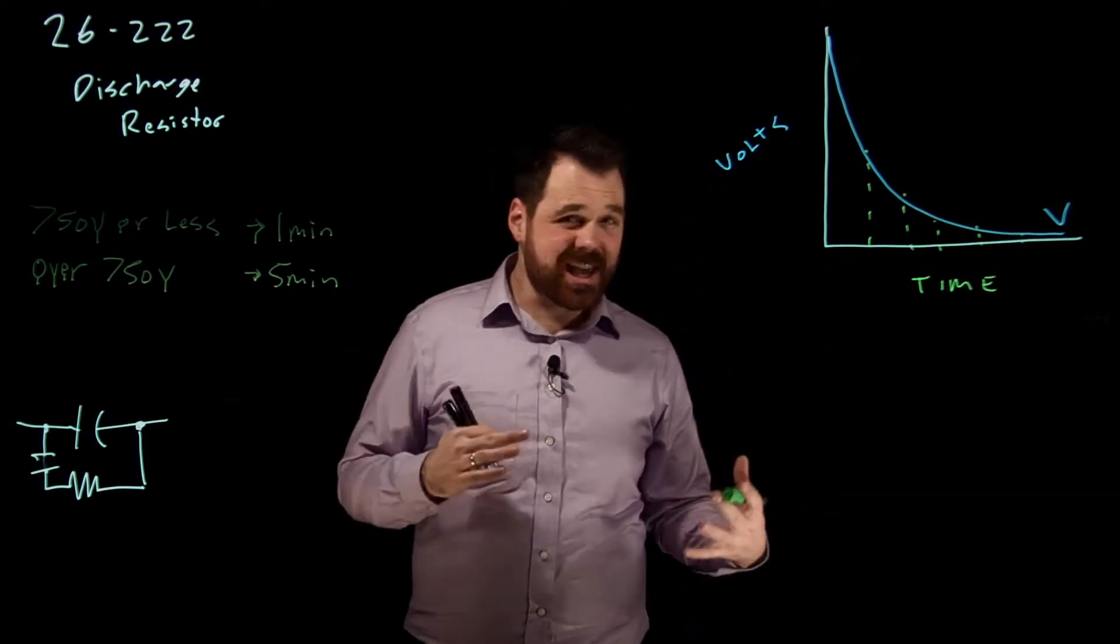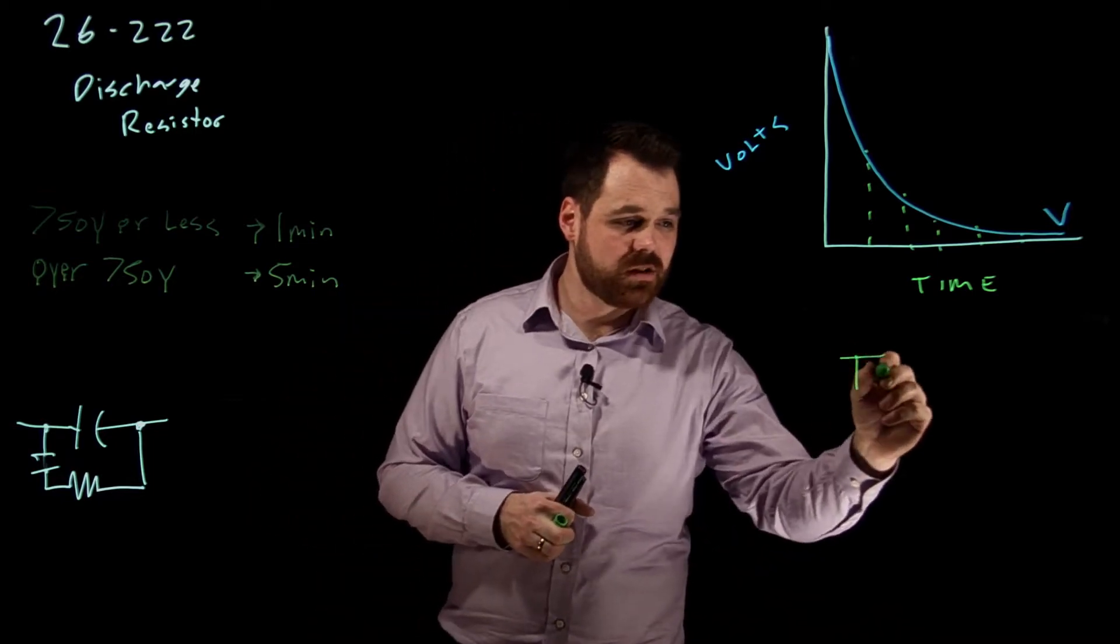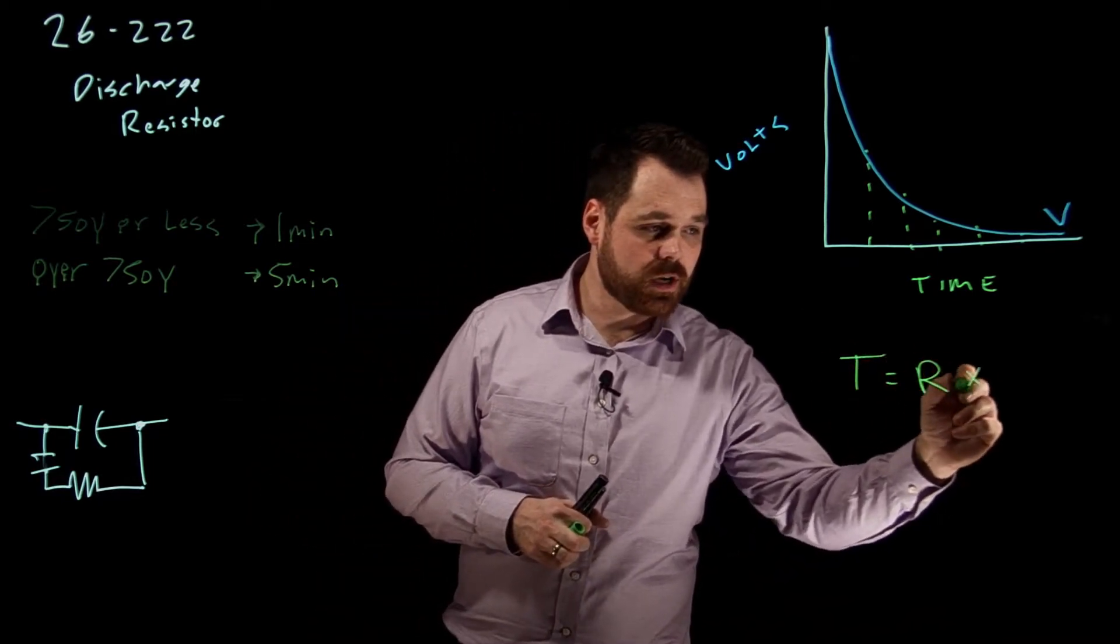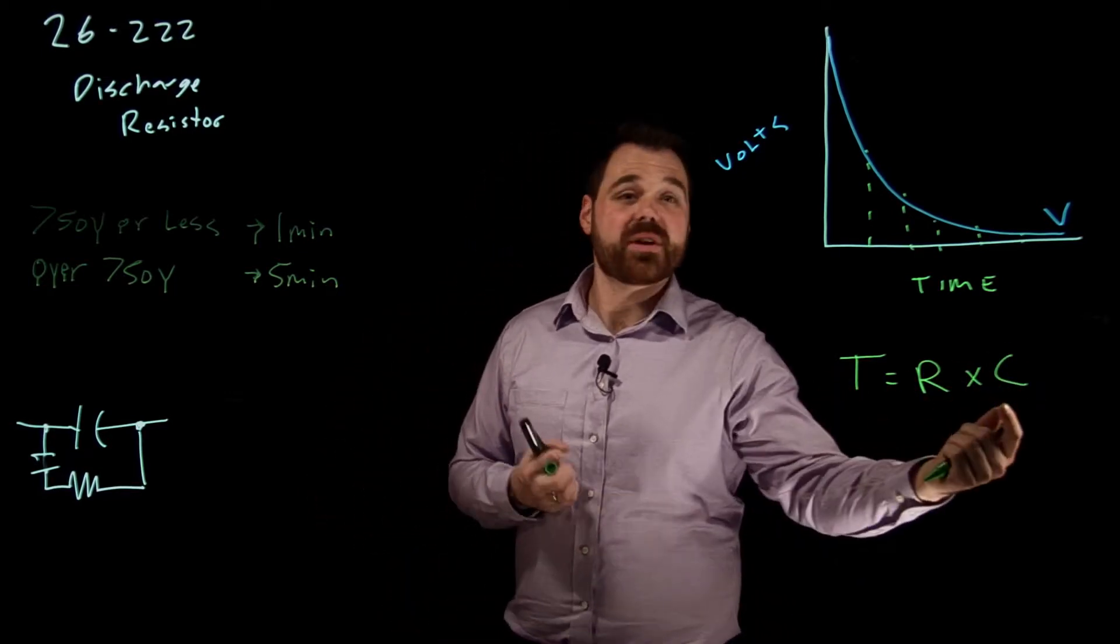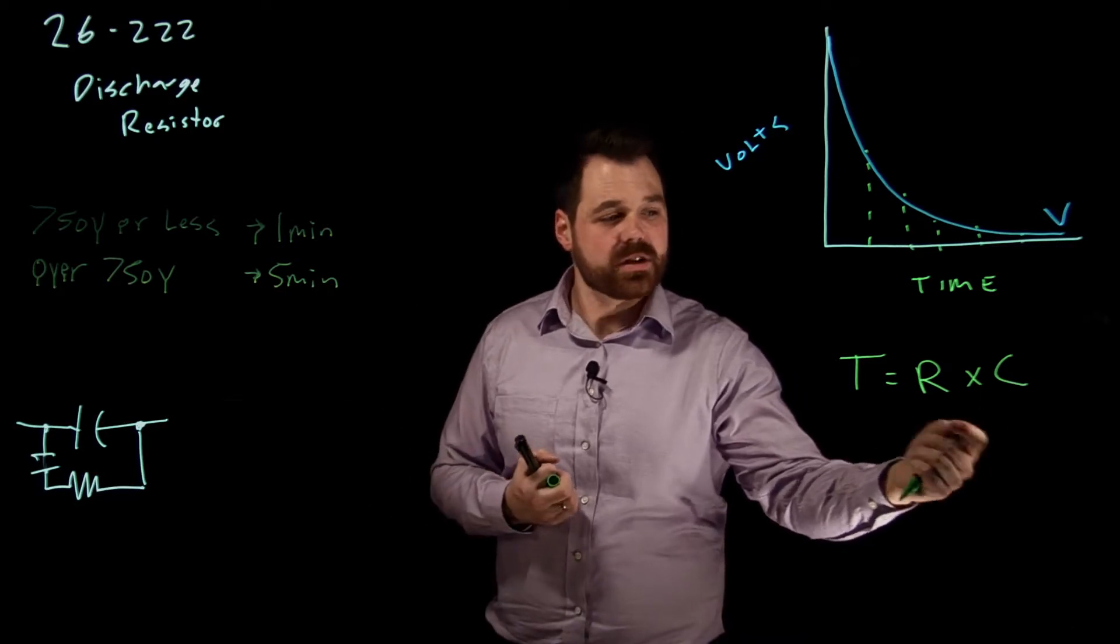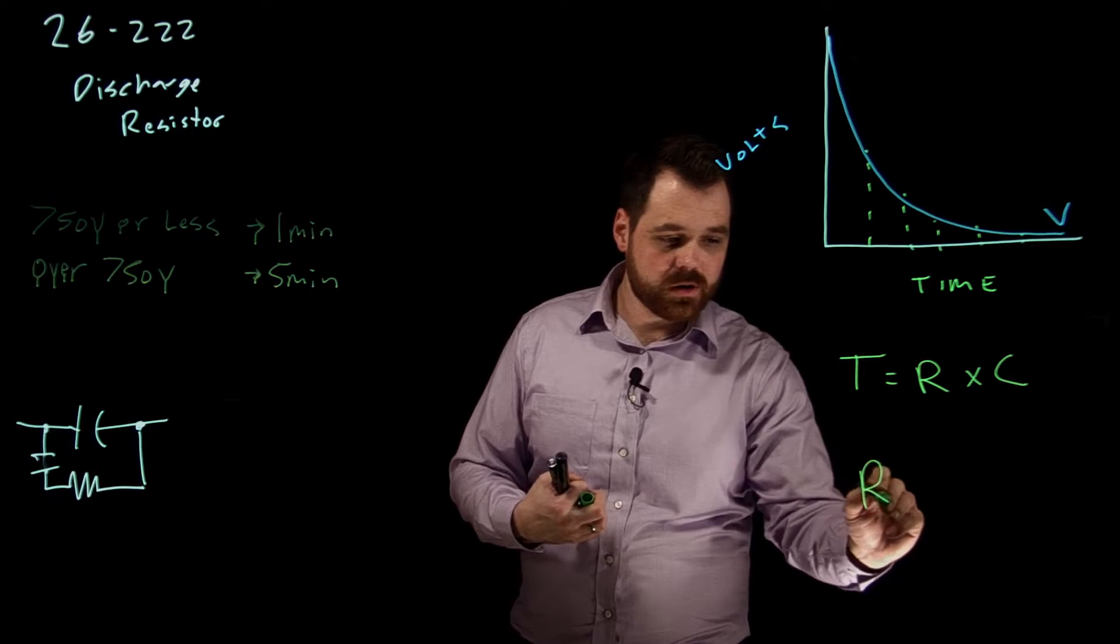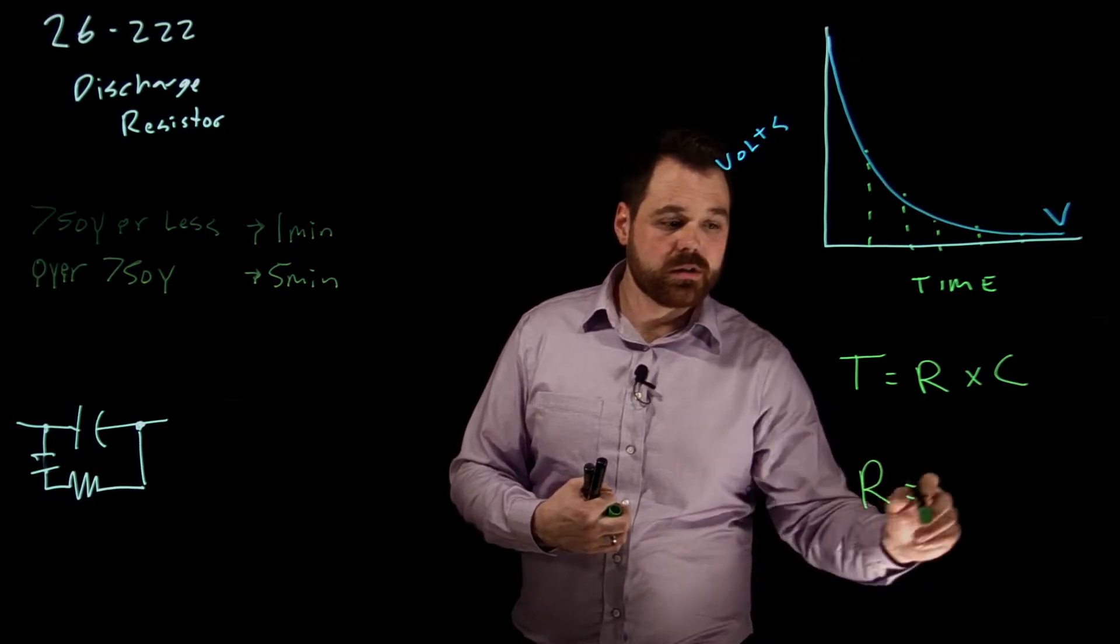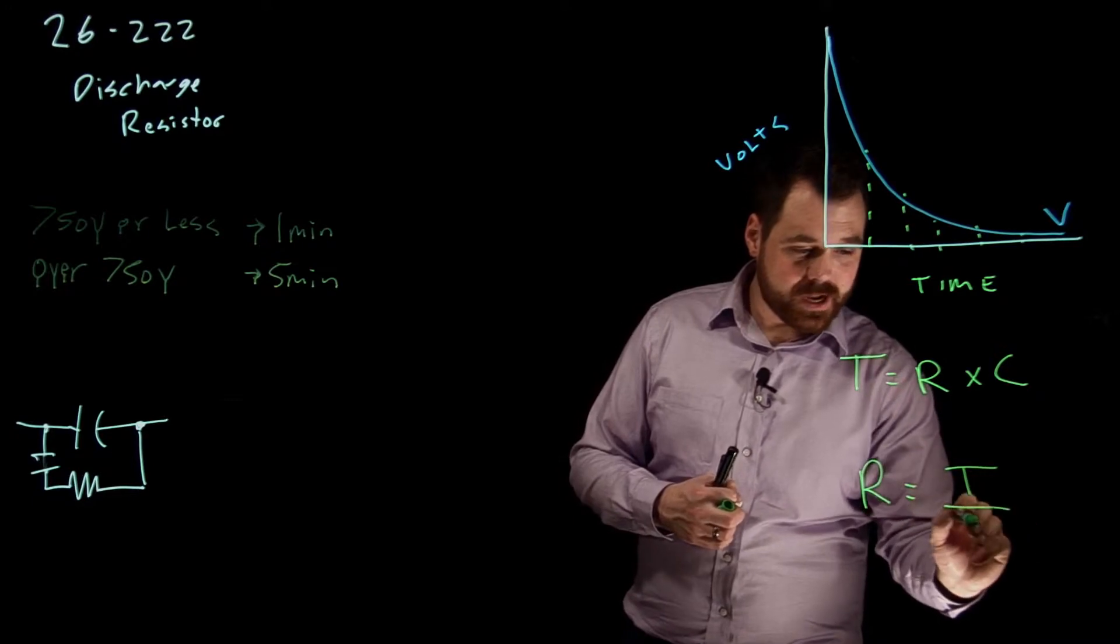And we have a formula in order to calculate those equal time constants of discharge. That formula is T equals R times C. In this case, we know the time and we know the capacitance because we know what our capacitor is. What we're trying to calculate is the resistance. So R would equal T divided by C.